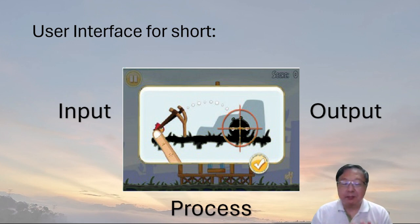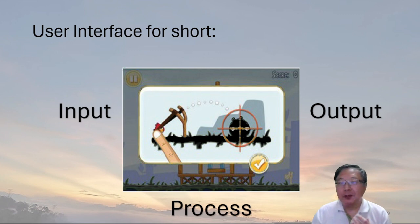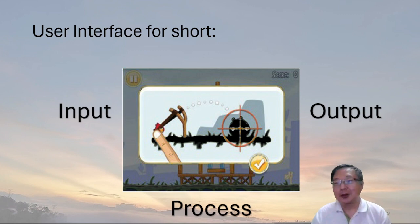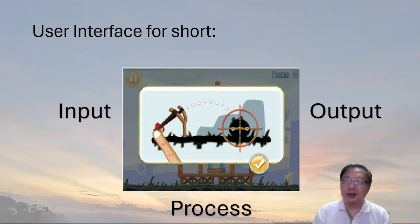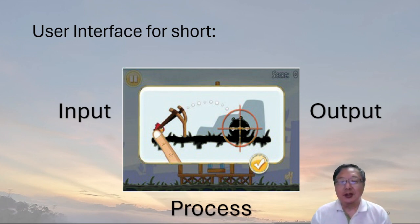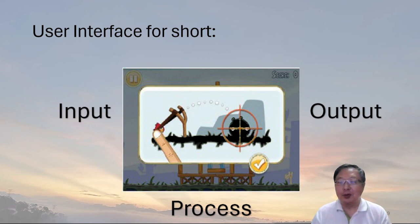Haptic feedback means buzzing the phone's motor so that you can feel the vibration. Then there's the input — the user tells the phone to do something, for example by touching an object and dragging. And the output — the phone does something like showing a bird flying and crashing, changing the score, playing the sound. And the process: in Angry Birds, when the user lets go of the bird, the processor works out where the bird will fly and land and how the landscape will be affected.